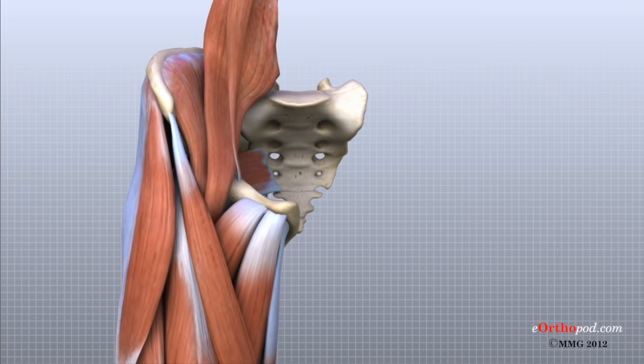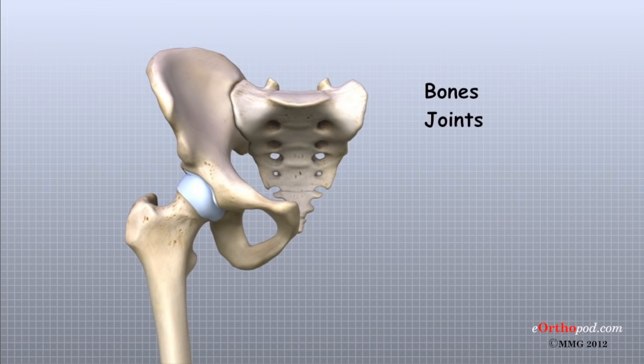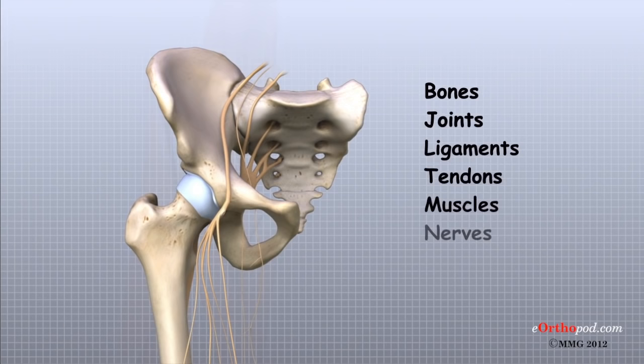The important structures of the hip can be divided into several categories. These include bones and joints, ligaments and tendons, muscles, nerves, blood vessels, and bursa.